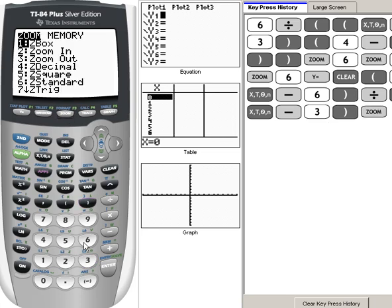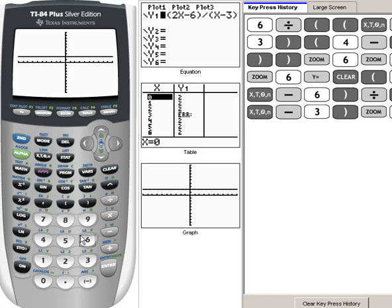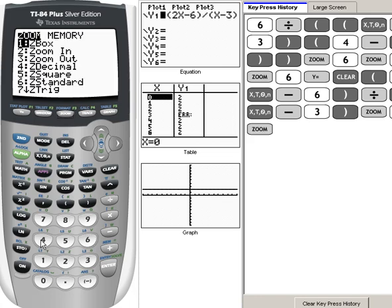And whenever I do a zoom 6, now we can see that that graph actually does look like y equals 2. That's because those are very, very similar.